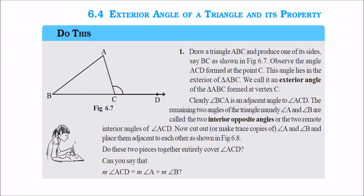Exterior angle of a triangle and its property. What is the exterior angle? If you extend — if this is triangle ABC and you extend the BC line — the angle which vertex C makes with this line BD is called the exterior angle. This angle and the adjacent interior angle are together called a linear pair because they add up to 180 degrees. The other two angles are called interior opposite angles.